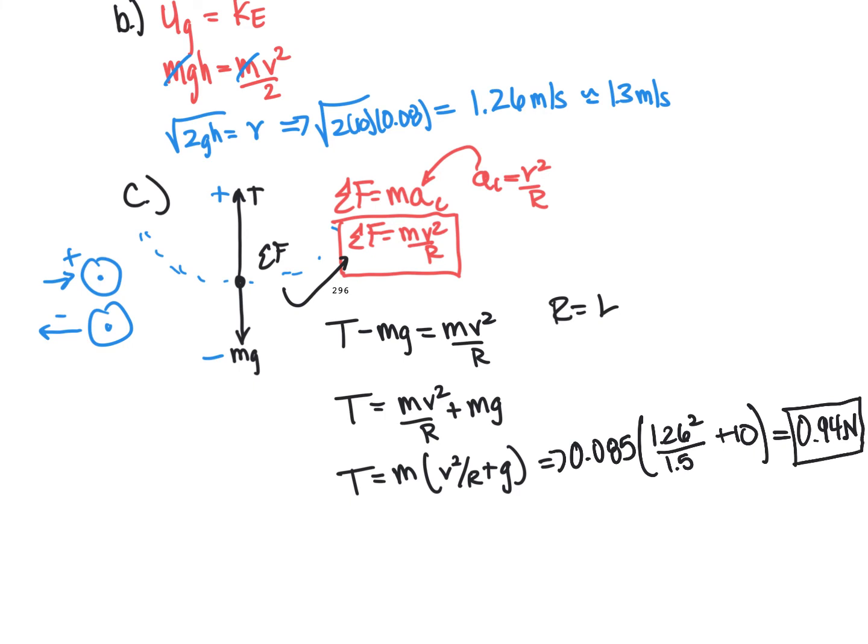You might get a different answer if you use G as 9.8, but you should get pretty close to this. You should get close to about 0.9 newtons. So that would be the proper way to do part C.